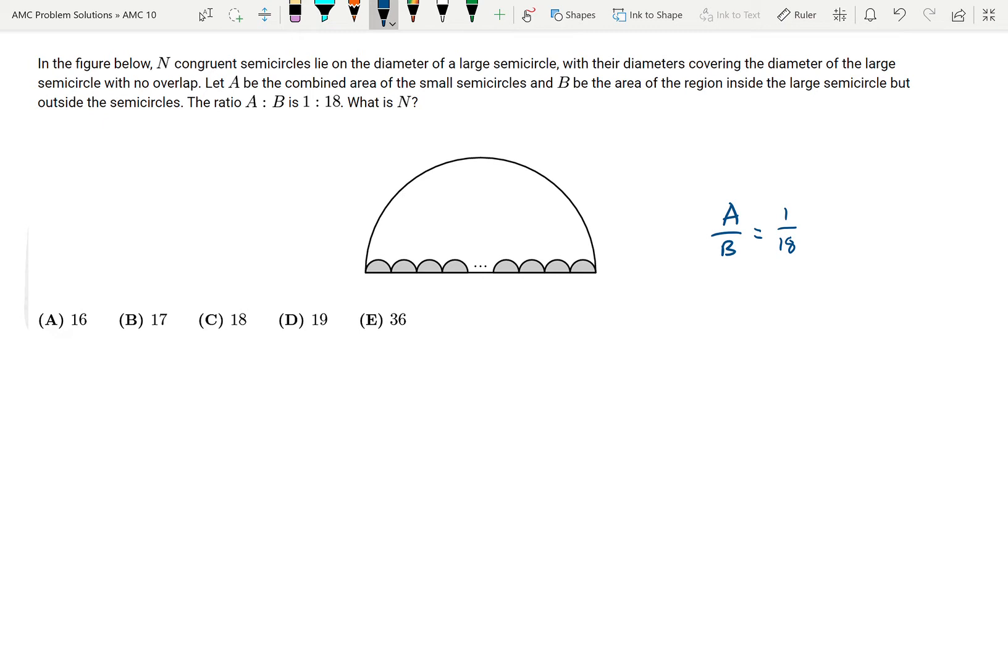So let's start with the several shaded semicircles. Let R equal the radius of a small semicircle.